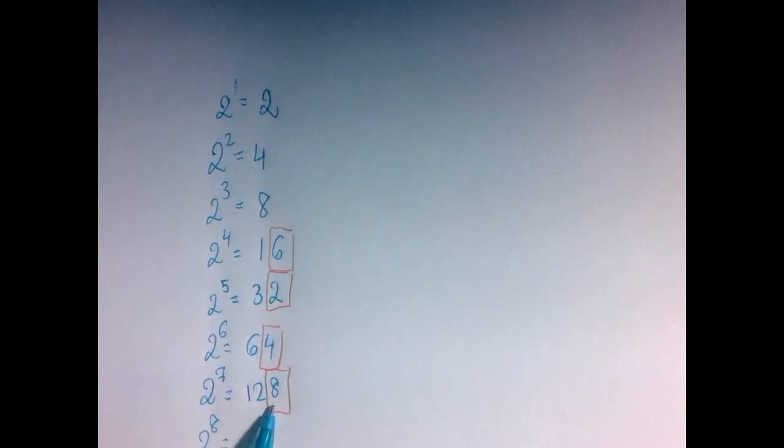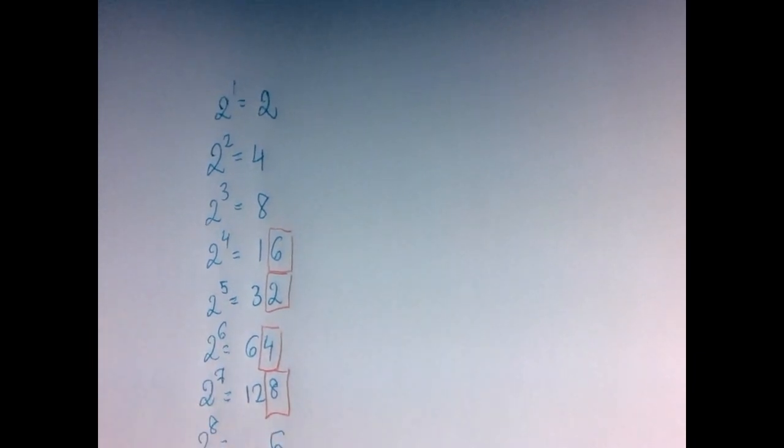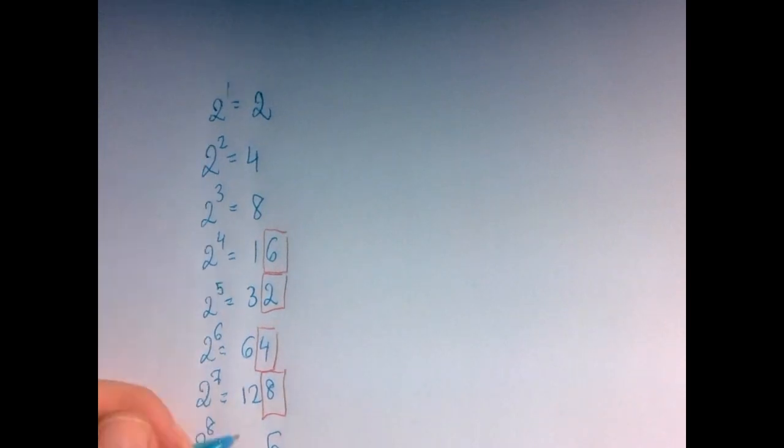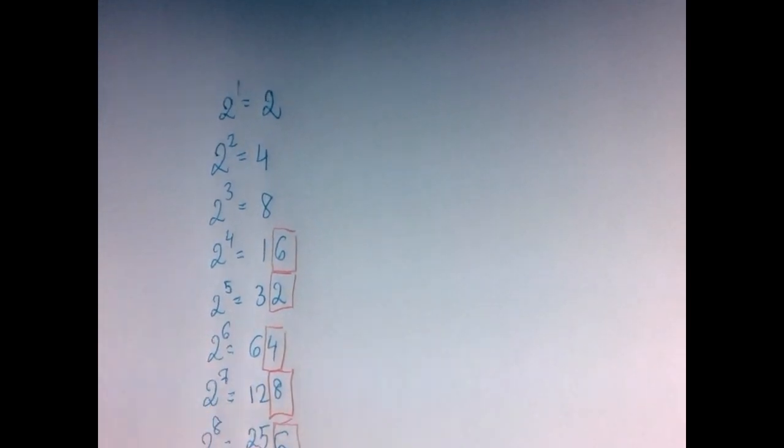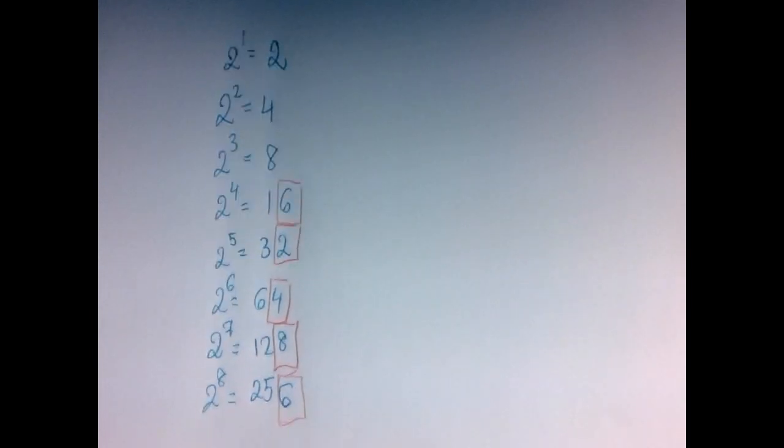We multiply the previous one by 2. We start here, right? 8 times 2 is 16. Write down the 6, carry the 1, but who cares in this particular case. We have a number and we double it. The last digit of the double will be completely determined by the last digit of the original number.